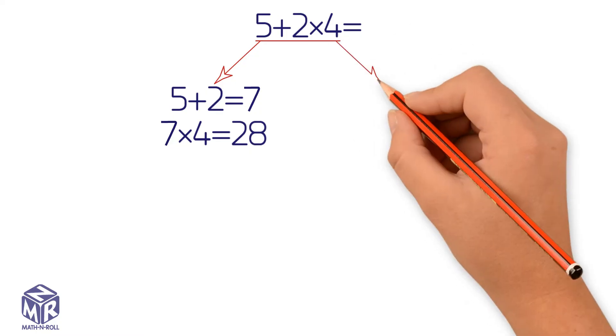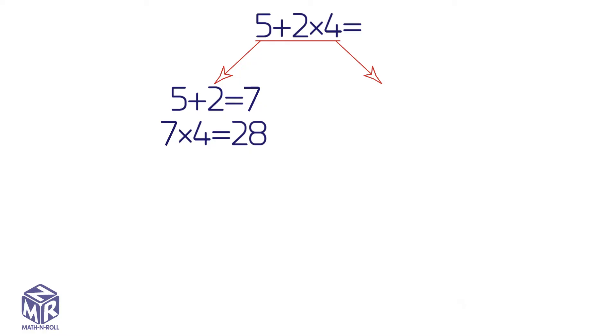Now let's try the other method. Multiplying first. 2 times 4 equals 8. Now we add 5 to 8 to get 13. As you can see, each method gives a different answer. So which method is correct?